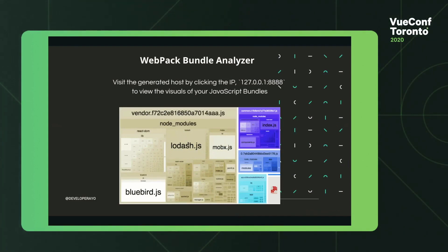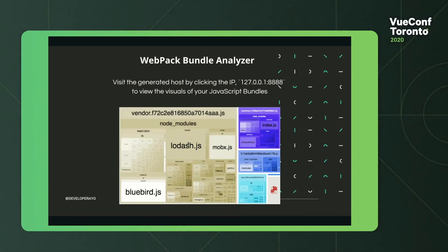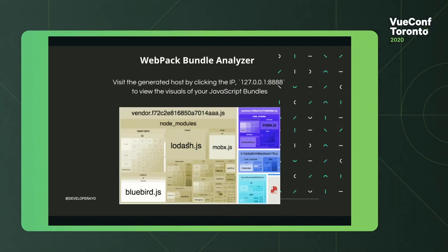Once you visit that URL, you get a visual preview in your browser. As you hover over the areas, it shows you the size of each package — you can also click and go into folders to see how large the things inside are. The analyzer shows you what exactly you can optimize, what you can make faster, and how much space each dependency is taking up. You can also use Chrome Lighthouse alongside it — it shows your performance score and whether you have PWA configured.